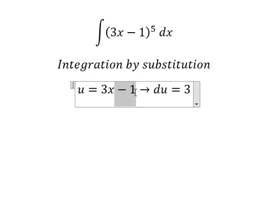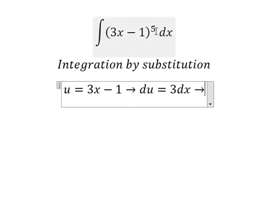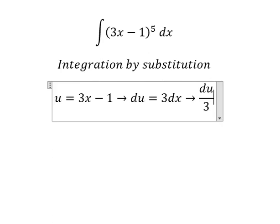The derivative of the constant negative 1 is zero. So we have du equals 3dx, and we divide both sides by 3 to get du over 3 equals dx.